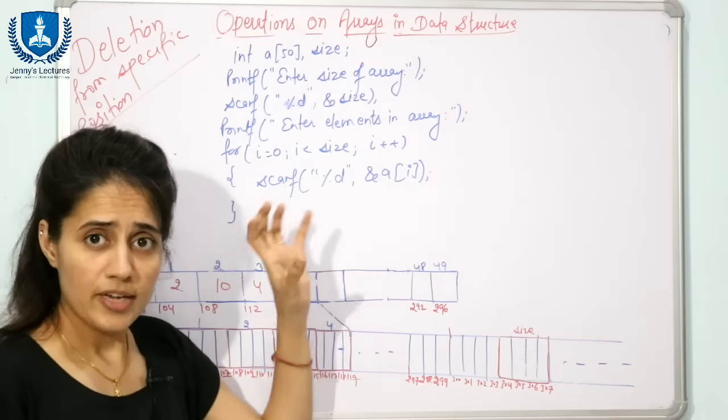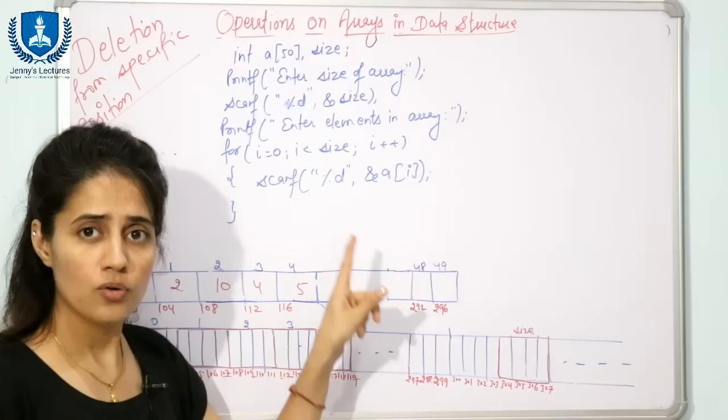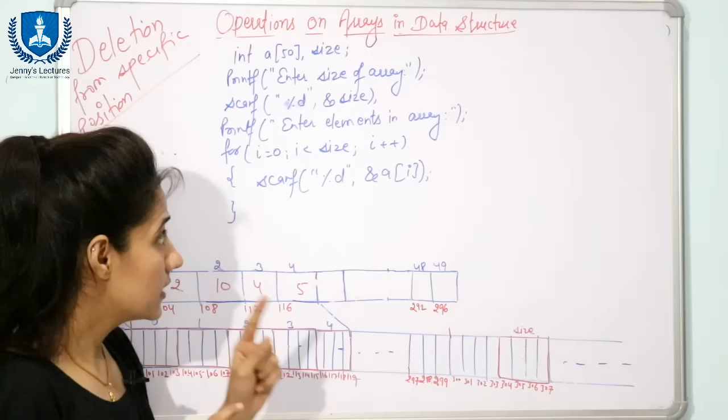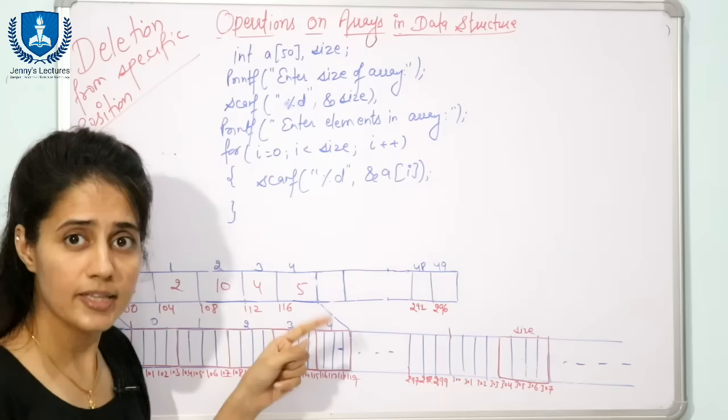I have taken this example from the previous video, so I am going to use this example only for explaining the deletion operation. If you get how to delete data from a specific position, then you can easily understand how to delete data from the beginning and from the end of the array. First we will discuss the delete process with the help of this example, then we will write down the code.